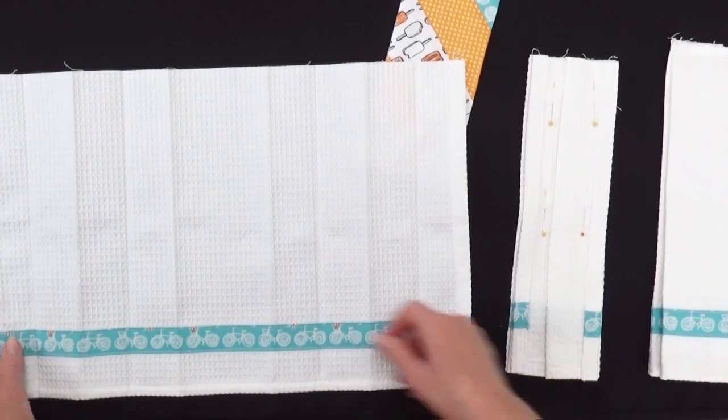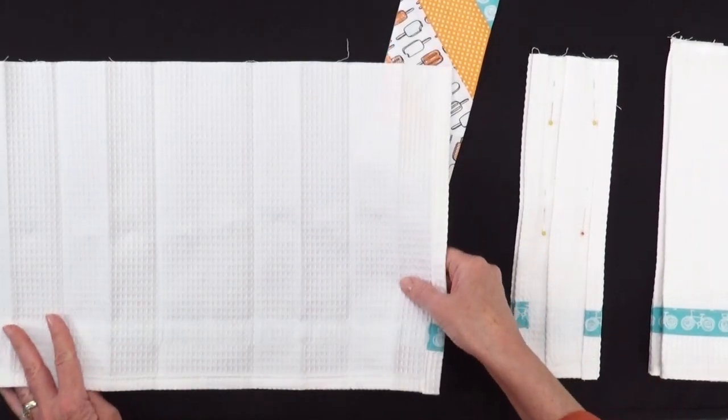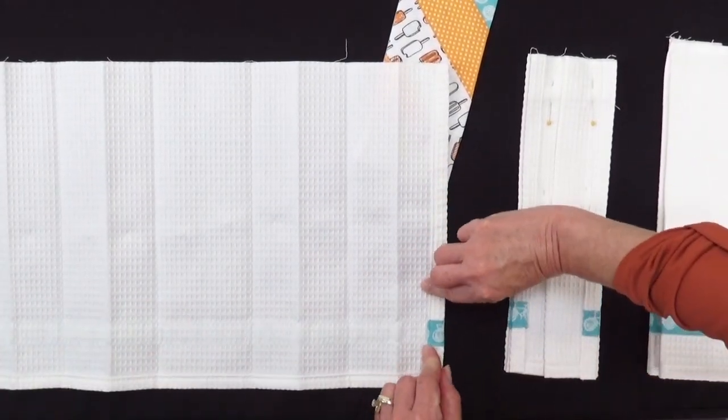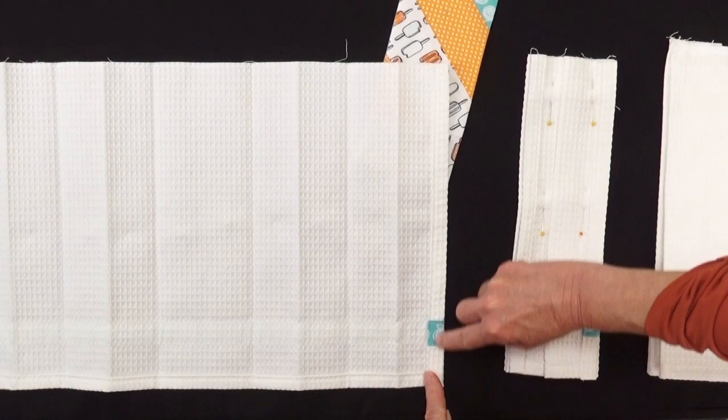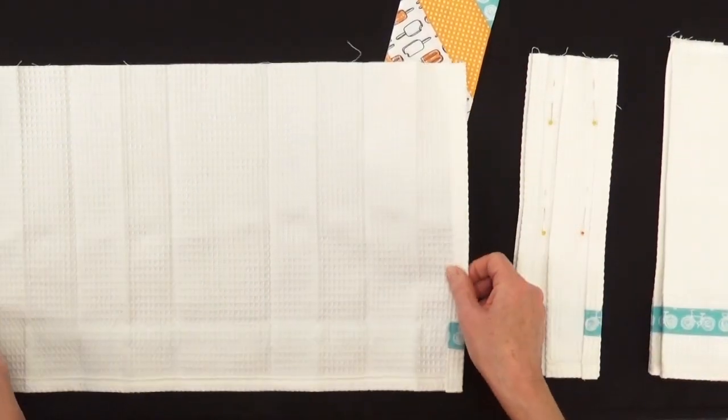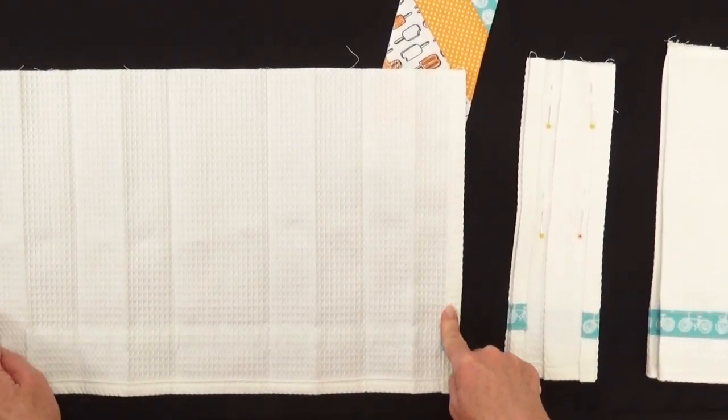Our decorative border is in place. We now flip it over to the back and we're going to hem the two sides. A half inch fold over, a half inch again and stitch along the edge on both sides. So now our bottom and two sides are hemmed.